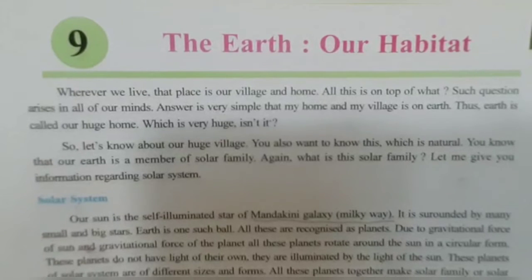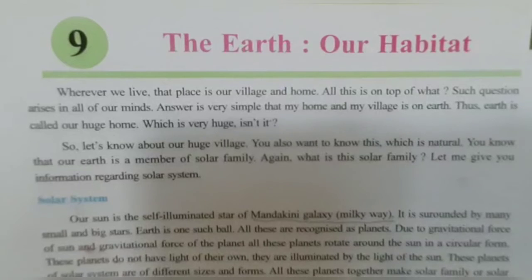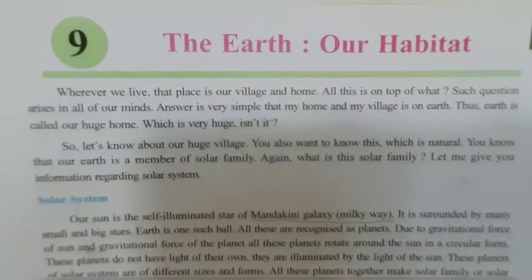Question number 7, page number 51: What would happen if the earth did not rotate on its axis? If the earth did not rotate on its axis, then all places on the earth would not face the sun alternately. As a result, day and night would not happen. There would be day constantly on the place which faced the sun, and the place which did not face the sun would have night permanently.